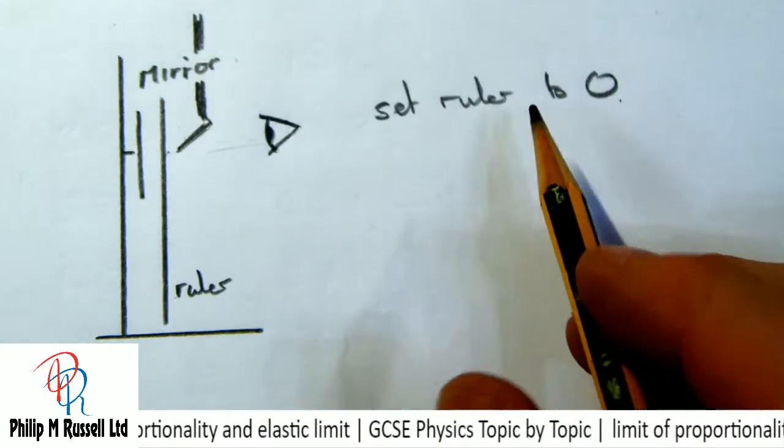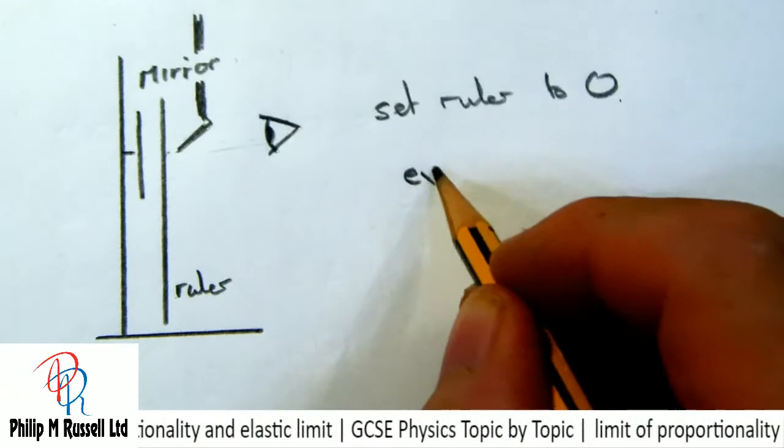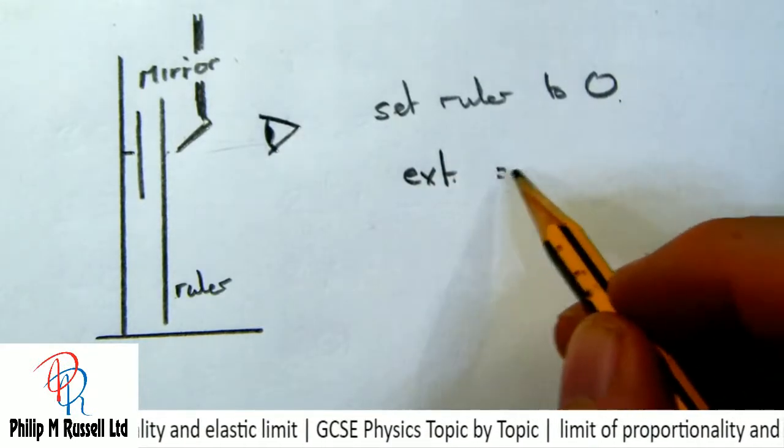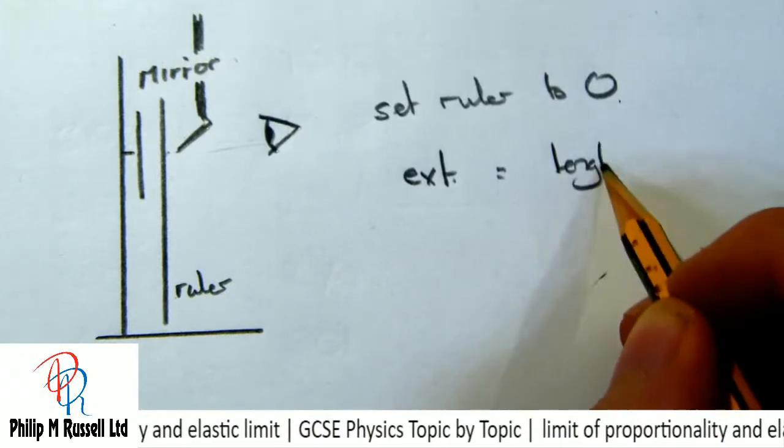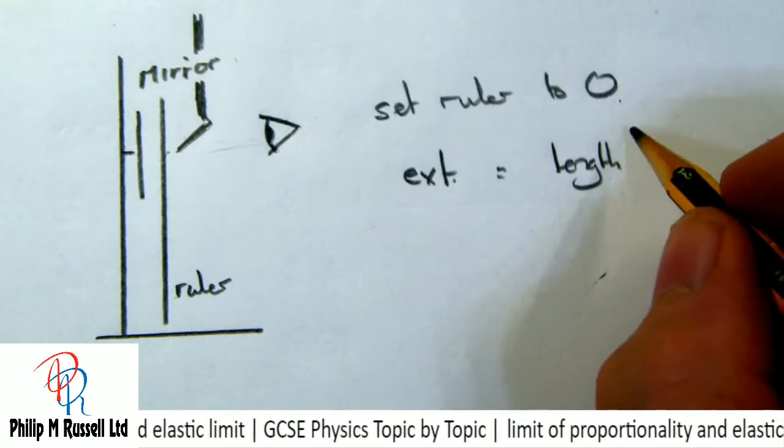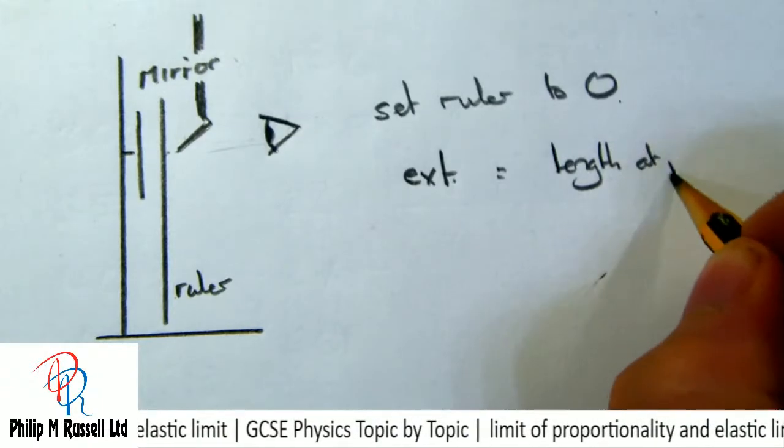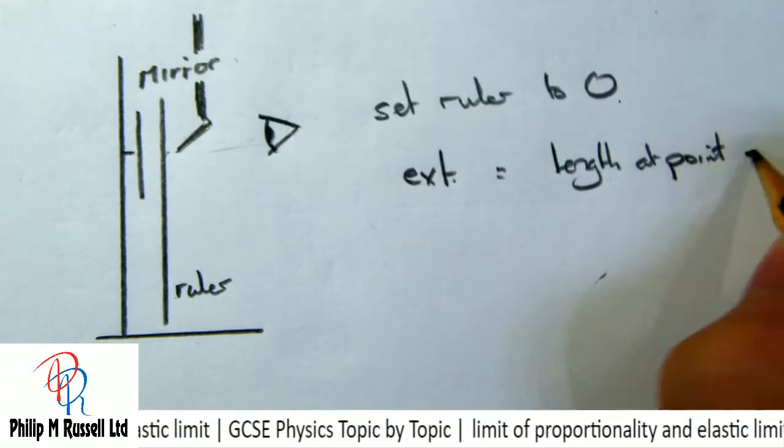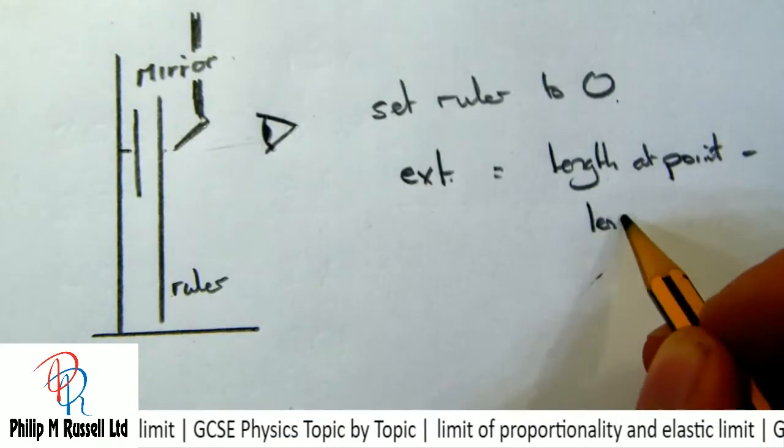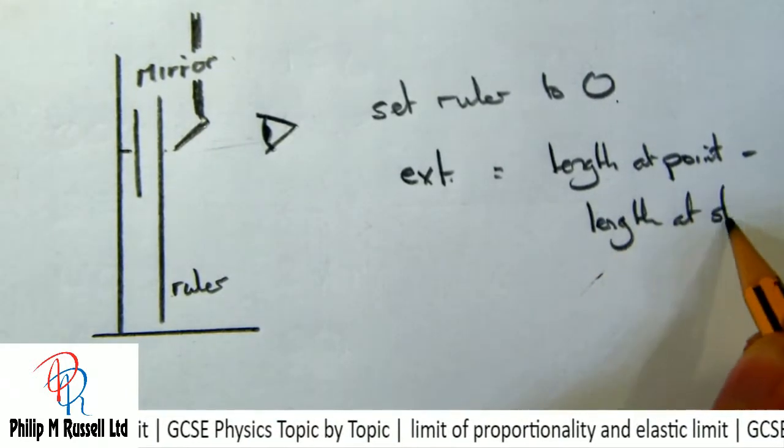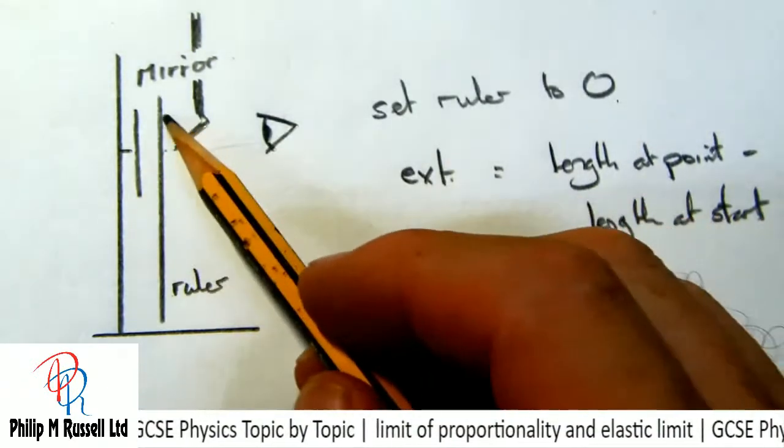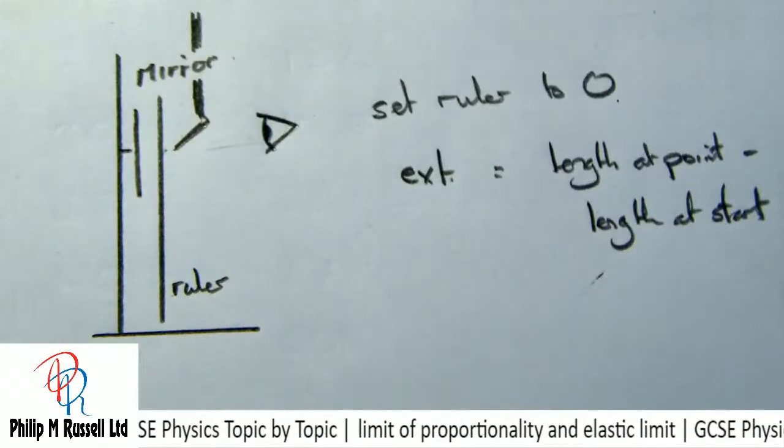Now that's okay. The other one is I also set my ruler to zero. If you don't, what you have to work out is the length at a point and from that you have to take away the original length. I set it to be zero at the start. So our spring constant is the gradient of my line.